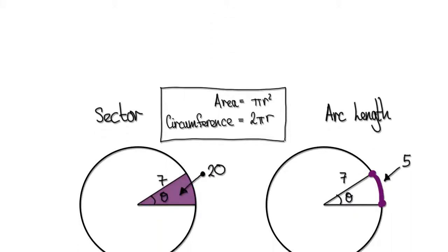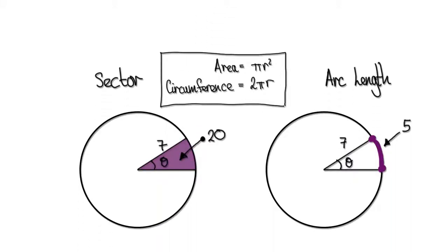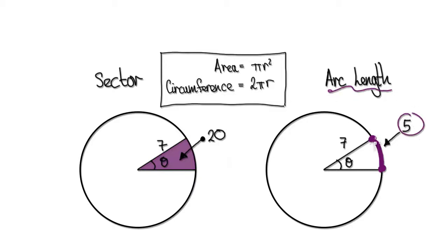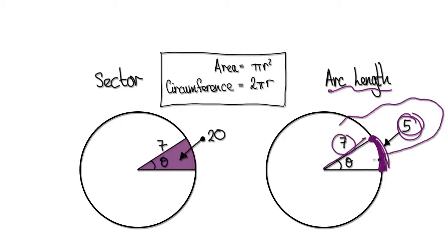In this video, given an area of 20 and the radius of 7, we have to somehow work backwards to find the angle. Let's call it theta. Here we've given the arc length of 5, so this length here is 5, and the radius is 7. We have to somehow work out the angle.